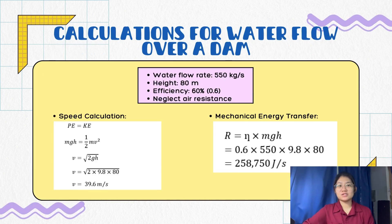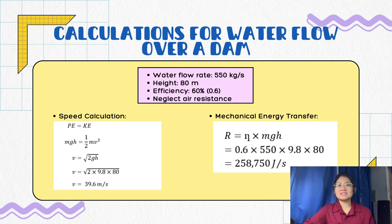Next are calculations for a waterfall over a dam. The given values are: waterfall rate of 550 kg per second, height of 80 meters, efficiency of 60%, and air resistance is neglected. For the speed calculation, as per energy conservation, the potential energy is converted to kinetic energy, so potential energy equals kinetic energy. Hence, the speed of the water just before striking the turbine is V = 39.6 meters per second.